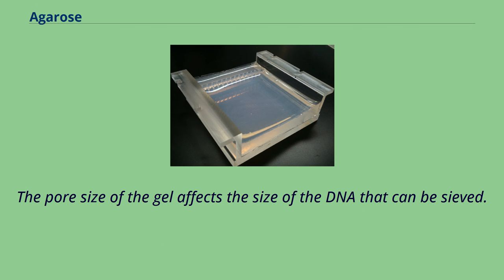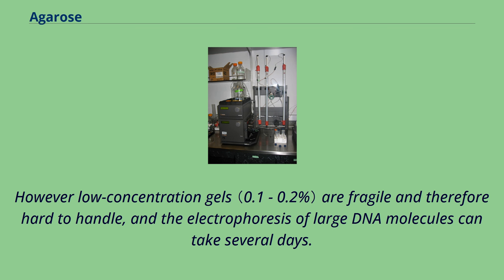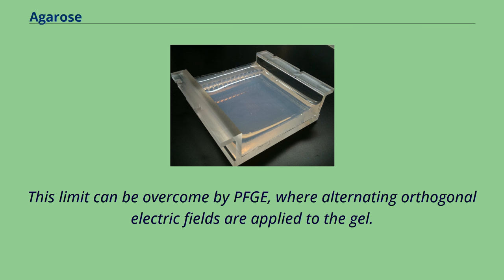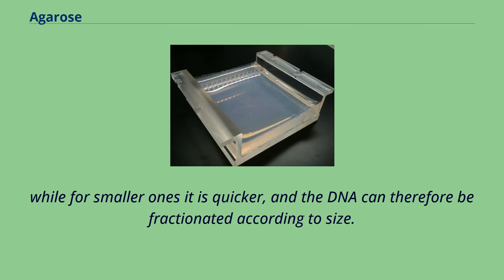The pore size of the gel affects the size of the DNA that can be sieved. The lower the concentration of the gel, the larger the pore size, and the larger the DNA that can be sieved. However, low concentration gels are fragile and therefore hard to handle, and the electrophoresis of large DNA molecules can take several days. The limit of resolution for standard agarose gel electrophoresis is around 750 kilobases. This limit can be overcome by PFGE, where alternating orthogonal electric fields are applied to the gel. The DNA fragments reorientate themselves when the applied field switches direction, but larger molecules of DNA take longer to realign when the electric field is altered, while for smaller ones it is quicker, and the DNA can therefore be fractionated according to size.